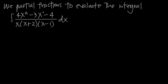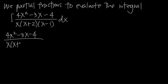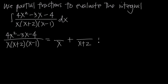You're going to keep the original fraction on the left hand side: 4x squared minus 3x minus 4, divided by x times x plus 2 times x minus 1. Set that equal to, and give each factor its own fraction — x in one, x plus 2 in the next, x minus 1 in the last. When you have linear factors, the numerators are just single constants: A, B, and C.